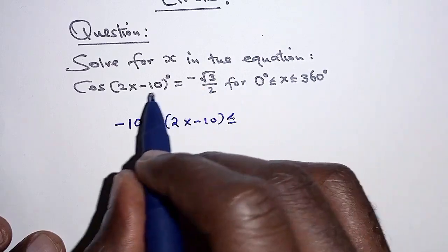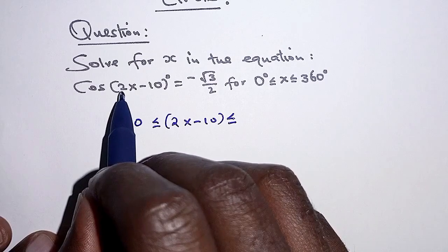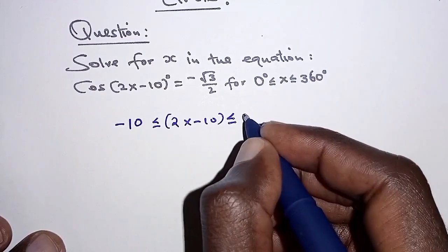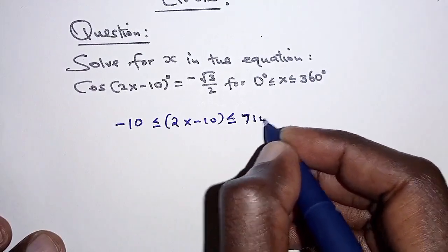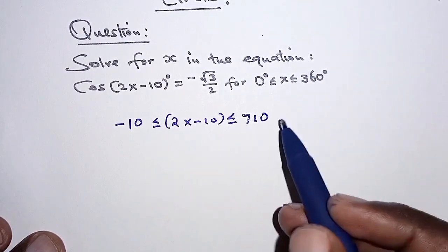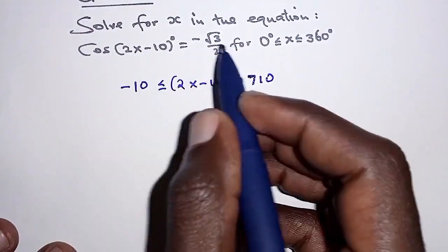the next one we substitute 360, so 360 is substituted here, that is 2 times 360 equals 720, 720 minus 10, that is 710. So this should help us in listing so that we don't go beyond the limits. And then we can now go back to the equation.